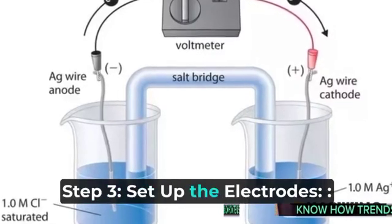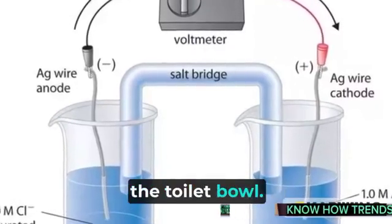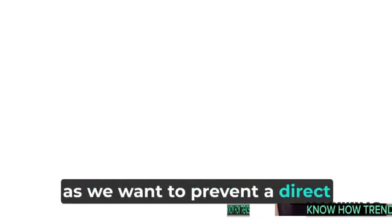Step 3: Set up the electrodes. Now, carefully place the copper and zinc electrodes into the toilet bowl. Make sure they don't touch each other, as we want to prevent a direct short circuit.